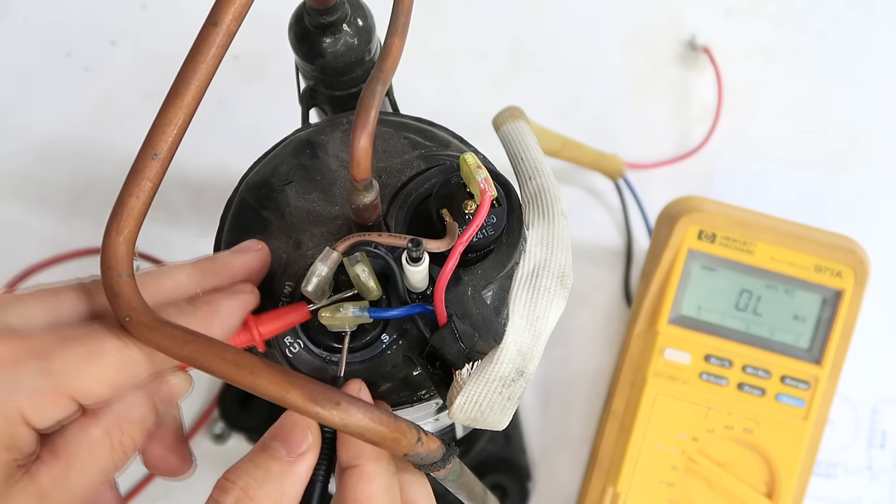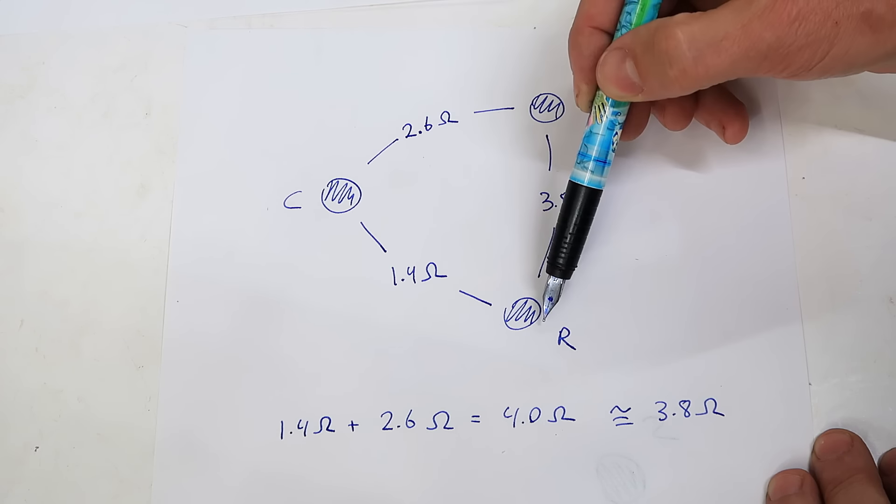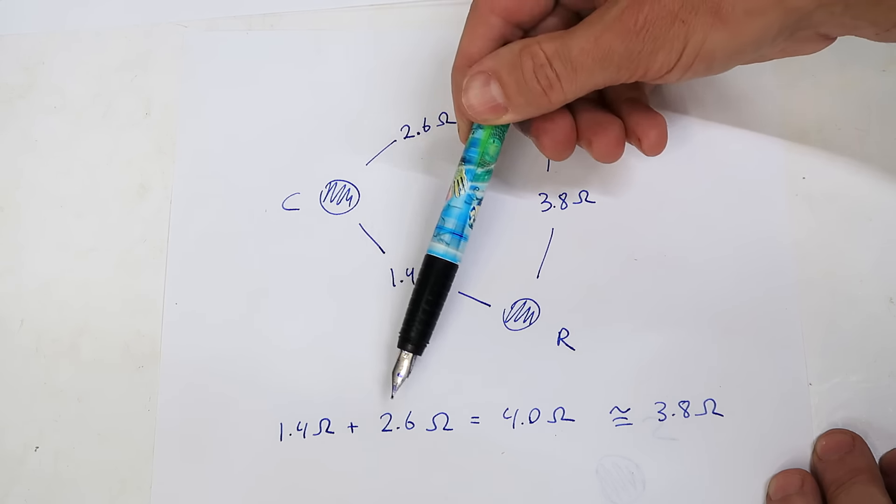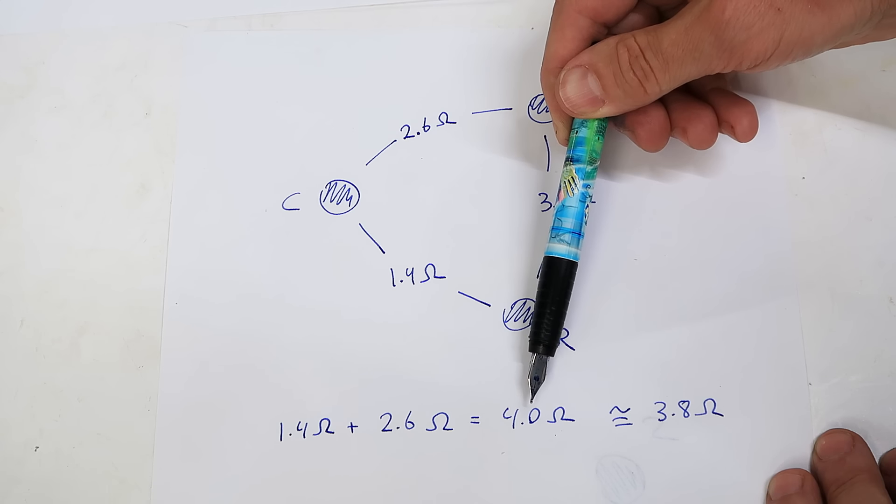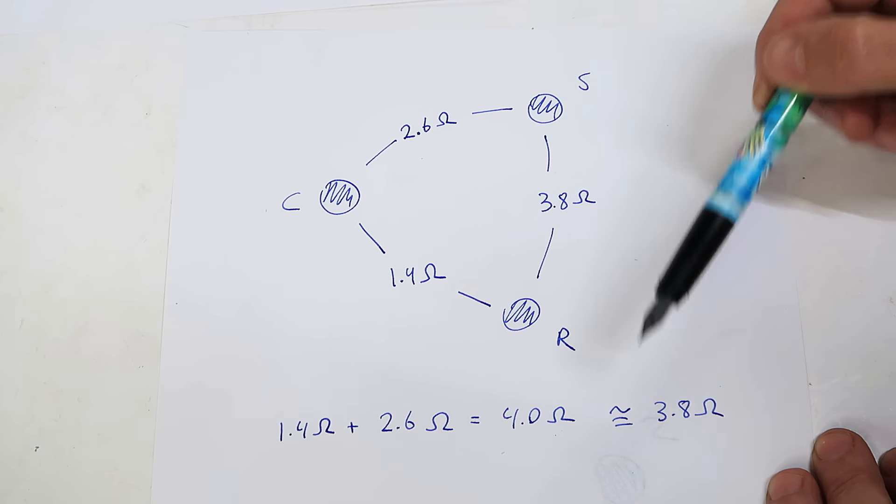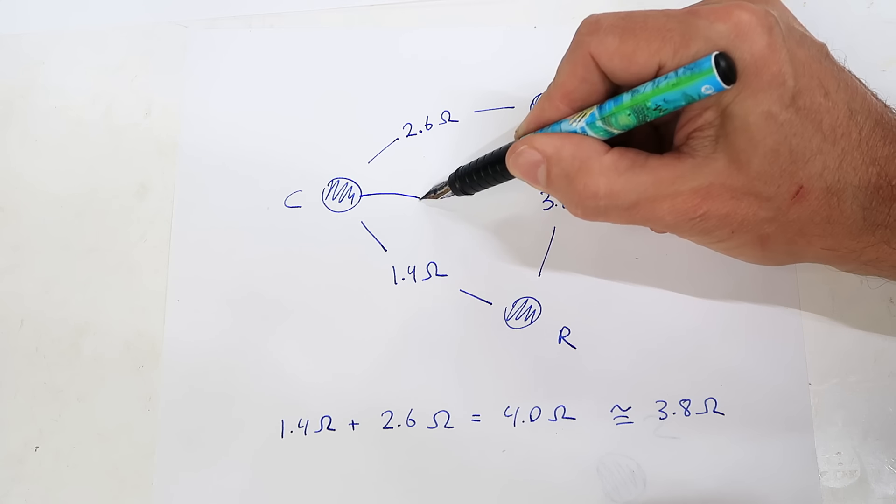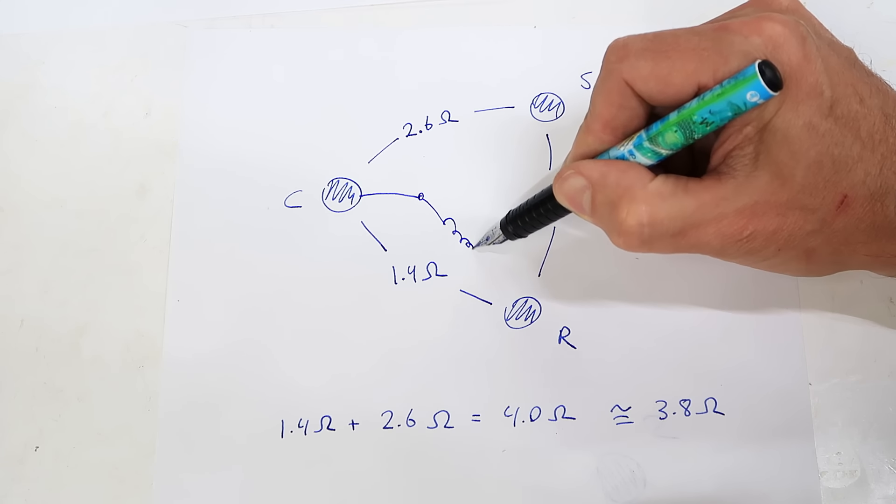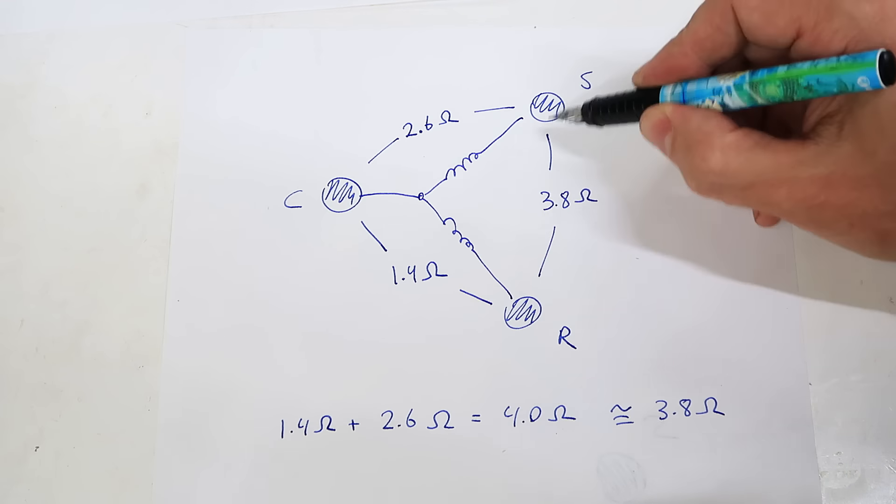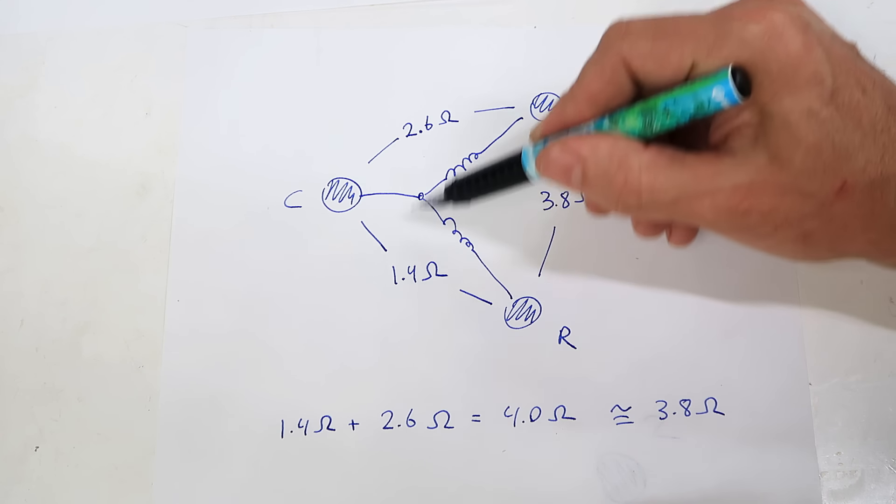I measure the DC resistance between the three terminals. Between C and R I get 2.6 and then 1.4 to R and S to R is 3.8 ohms. Basically the 1.4 plus the 2.6 ohms is 4 ohms, which is pretty close to the 3.8 ohms I'm getting across here, especially because the meter always reads about 0.1 ohm high. That tells me that internally I've got basically a winding going here and a winding going here, and if I measure between those two here I essentially go through both of those. That resistance is this one plus this one.